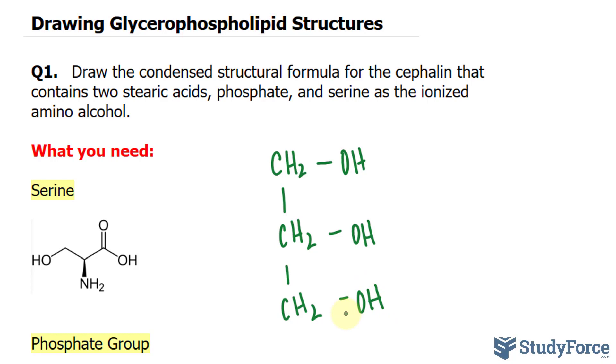It contains two stearic acids. That is a fatty acid with 18 carbons and no double bonds. So its shorthand notation is 18:0. Let's draw that on these two branches. Now, when fatty acids and glycerol come together, an ester bond forms between this hydrogen and the carbonyl of the fatty acid. We've discussed this in previous videos.